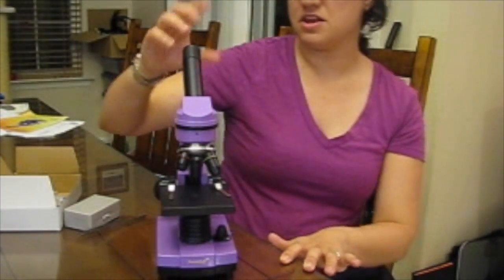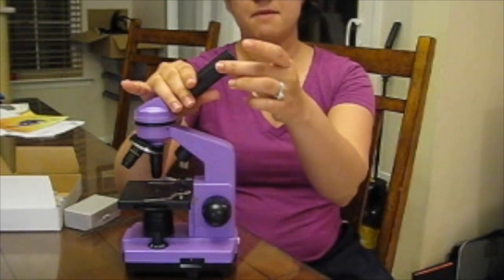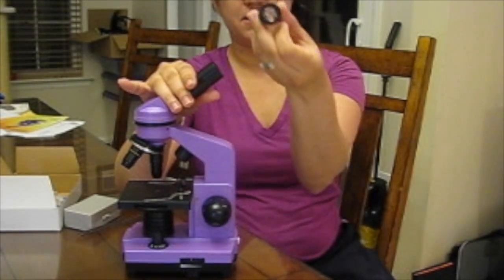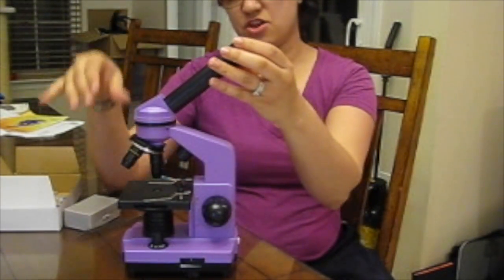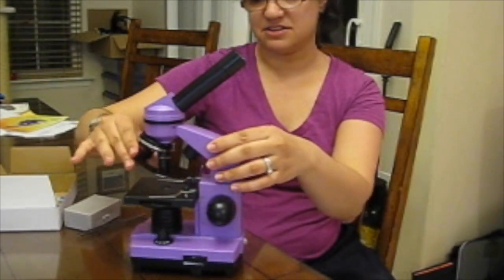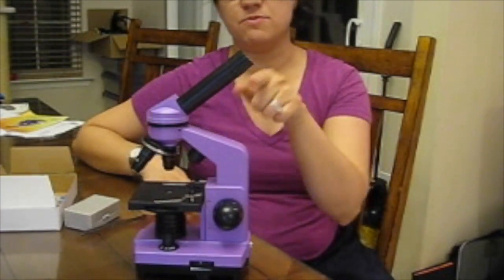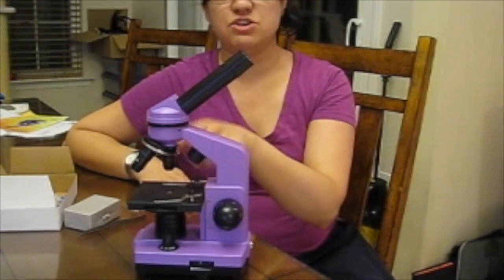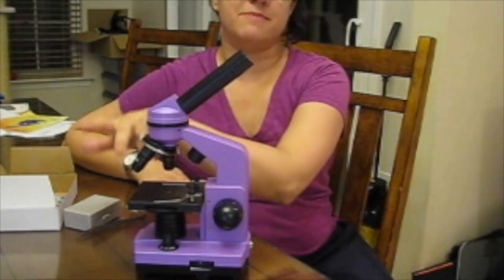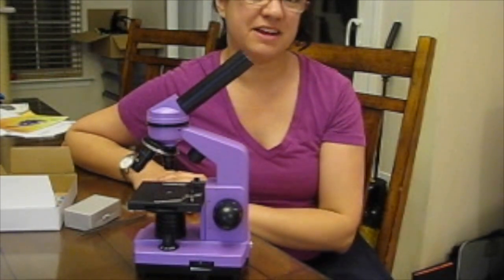So it has the lens piece includes a 10 times magnifying lens. And then there are three rotating lenses, which are 10x, 4x, and 40x. So you multiply the two together and you get 40 times, 100 times, and 400 times the magnification.